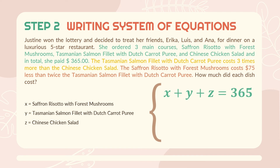Next, the Tasmanian salmon fillet with Dutch carrot puree (Y) costs three times more than the Chinese chicken salad (Z), so our second equation is Y = 3Z. Lastly, the saffron risotto with forest mushrooms (X) costs $75 less than twice the Tasmanian salmon fillet (Y), so our third equation is X = 2Y − 75. Now we have our three equations: X + Y + Z = 365, Y = 3Z, and X = 2Y − 75.